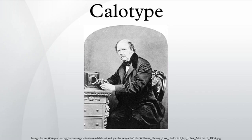This major improvement was introduced to the public as the Callotype or Talbotype process in 1841. The light-sensitive silver halide in Callotype paper was silver iodide, created by the reaction of silver nitrate with potassium iodide. Iodized paper was made by brushing one side of a sheet of high-quality writing paper with a solution of silver nitrate, drying it, dipping it in a solution of potassium iodide, then drying it again.